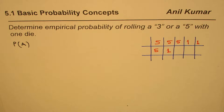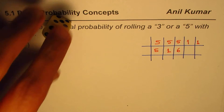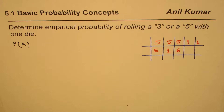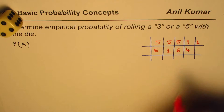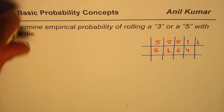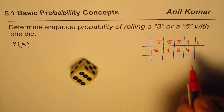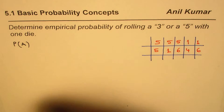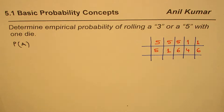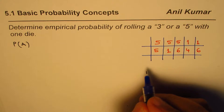Eighth roll: we get 6. Ninth roll: we get 4. Tenth and last roll: we get 6 again. Now we have rolled the die 10 times, so the total number of trials is 10.